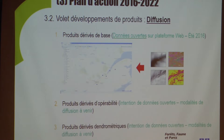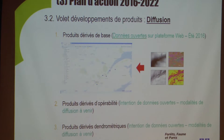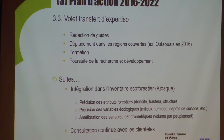Now, the basic derived products — how we're going to disseminate this information. In 2016, open data. We're very careful about the finalization, but our intention is to put it on a web platform for the basic derived products. We have the intention to have open data. This is for special targeted clients, but we're developing this whole idea right now. We have dendrometric derived products, and the dissemination models are being worked on right now. So we have an expertise transfer component.